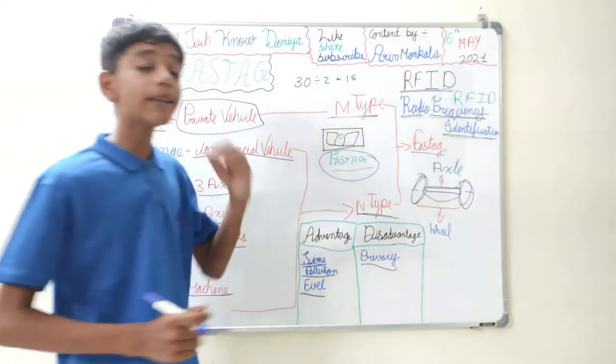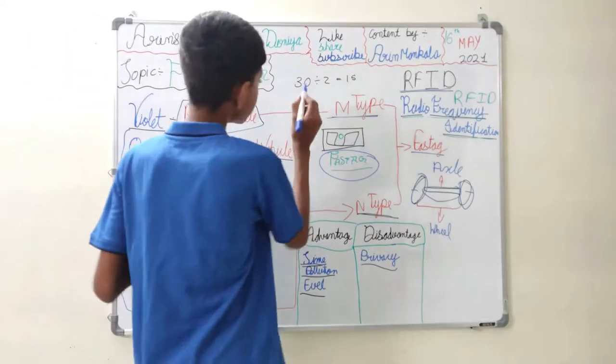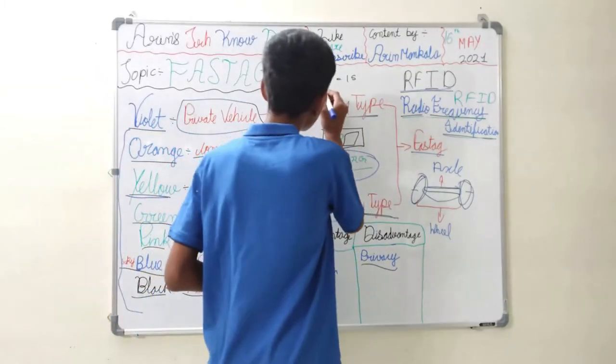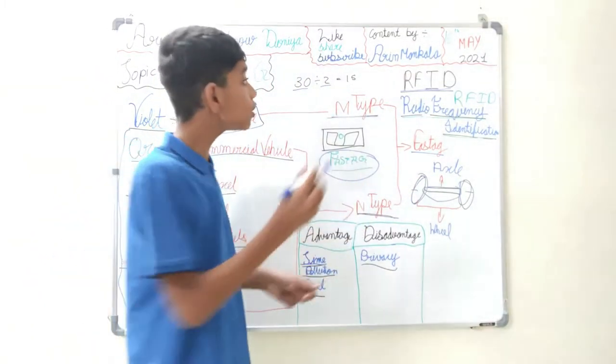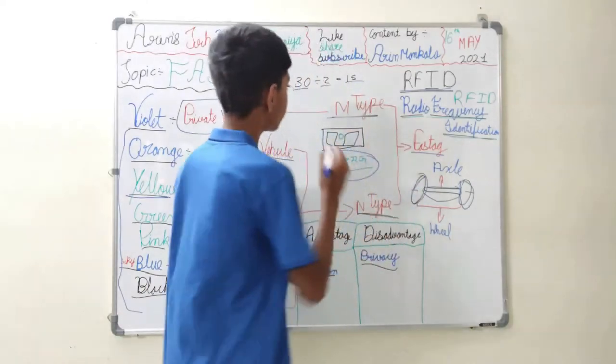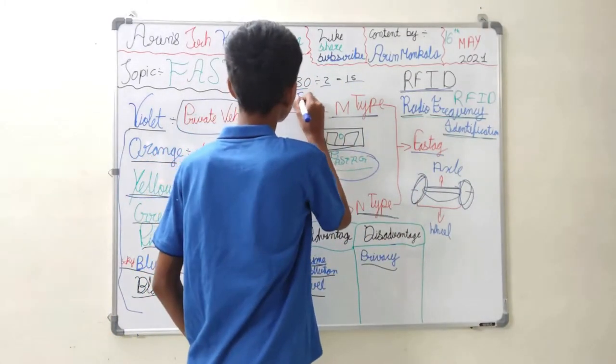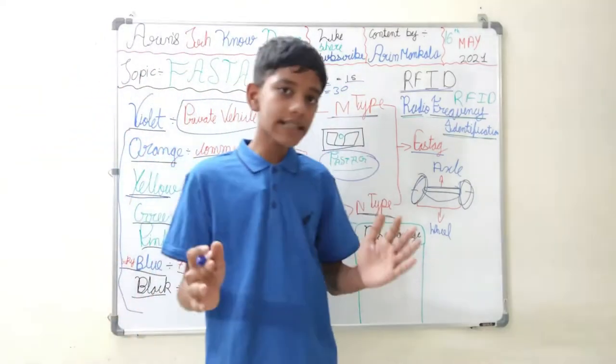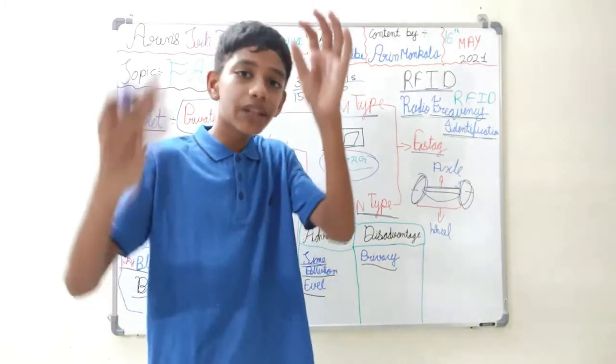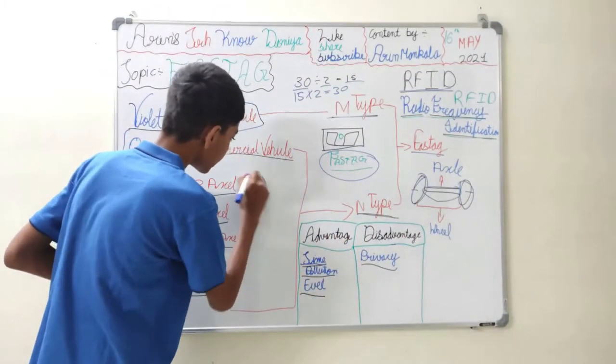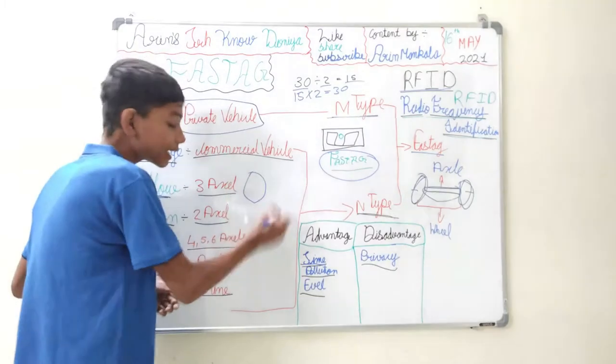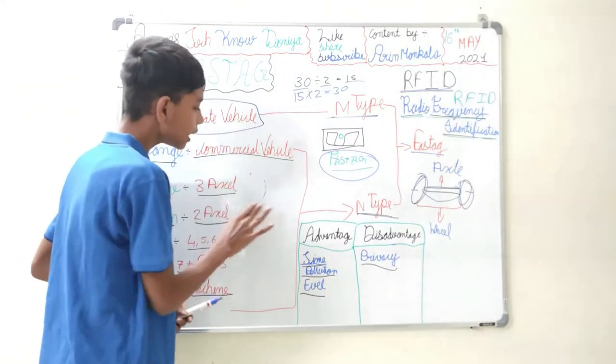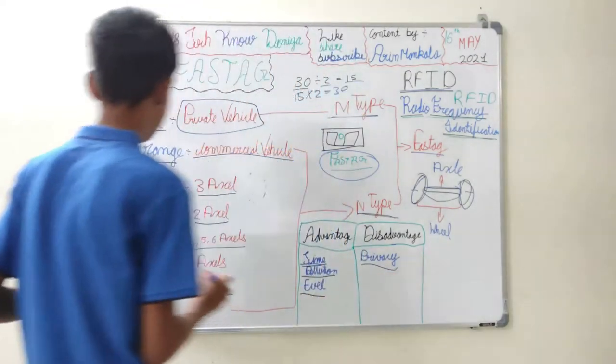So axle is a rod or a pipe that joins wheels. If you want to know how many axles a vehicle has, for example if the vehicle has 30 wheels, you divide it by 2. You will get the number of axles, that is 15. And if you want to cross check, multiply 15 into 2 equals 30. But scooties and bikes are not included because the engine is directly connected to the wheel. The wheel runs directly with the engine. Therefore scooties and bikes don't have the axle.